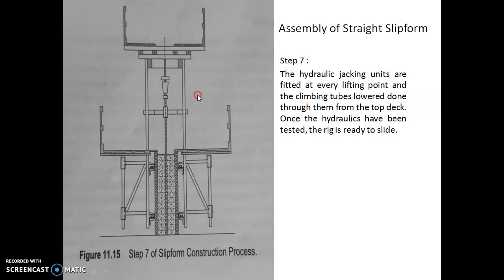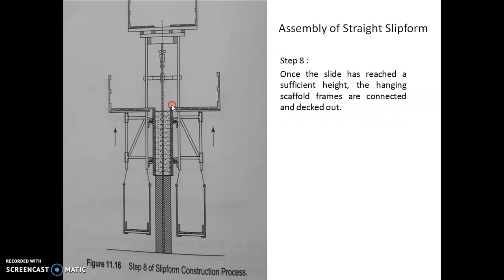In step 7, the hydraulic jacking units are fitted at every lifting point, and the climbing tubes are lowered through them from the top deck up. Once the hydraulics have been tested, the entire assembly is ready to slide up — that is, ready to begin the slip forming or sliding process.